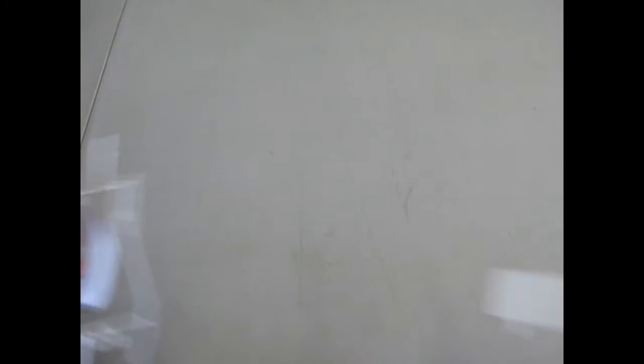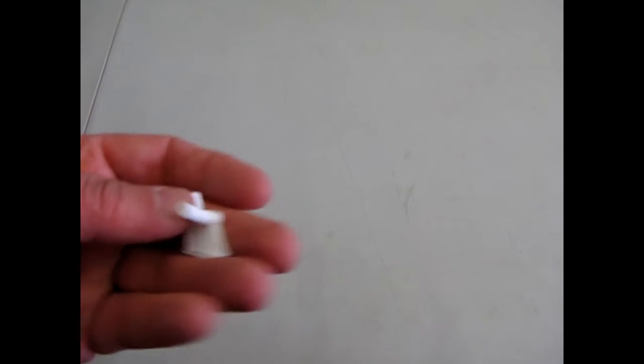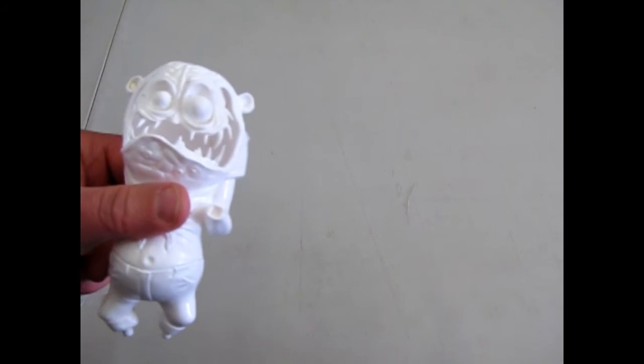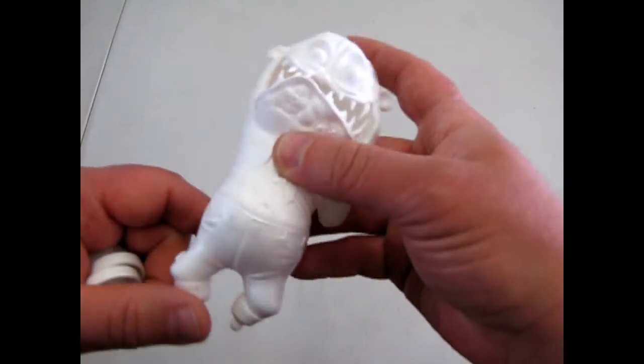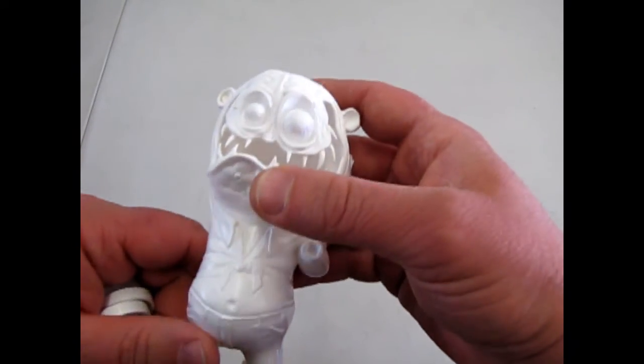Down there. And then he stands on that. So part of the fun with the Ed Roth kits is that the monsters in the cars are interchangeable. Depends where their hands are. So you could take Mother's Worry out and replace him with Mr. Gasser.